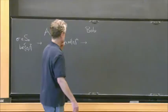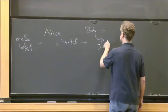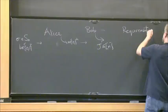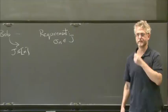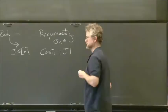Bob receives x and outputs a subset of {1, ..., n}. The requirement is that sigma_n, the last element of the permutation, should be an element of the subset j, and the cost is just the size of the subset j.